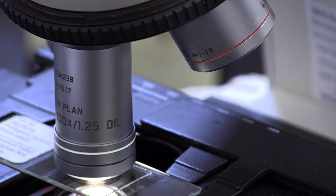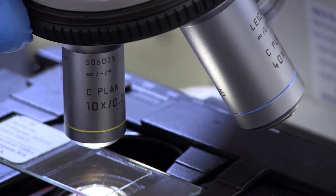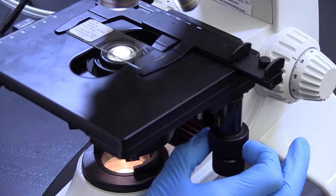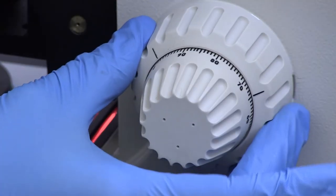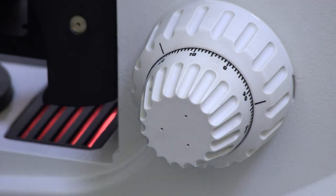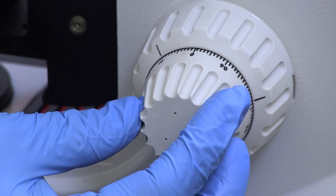Move the lowest power objective, usually four times, into position, listening for an audible click as it slips into place. Scan the slide until you see the field of view. Bring the image into focus using first the coarse focusing knob and then the fine focusing knob to obtain the sharpest possible image.